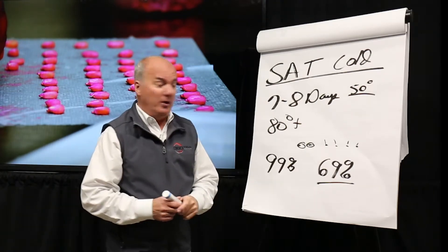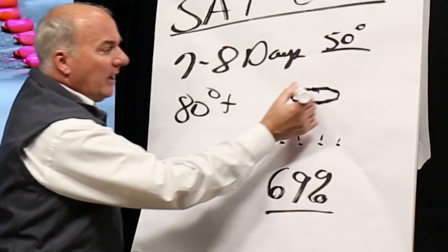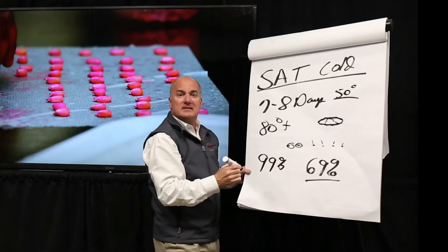And then I also get pericarp score. In other words, as we think about that seed, what kind of fractures might we have in the seed coating itself?